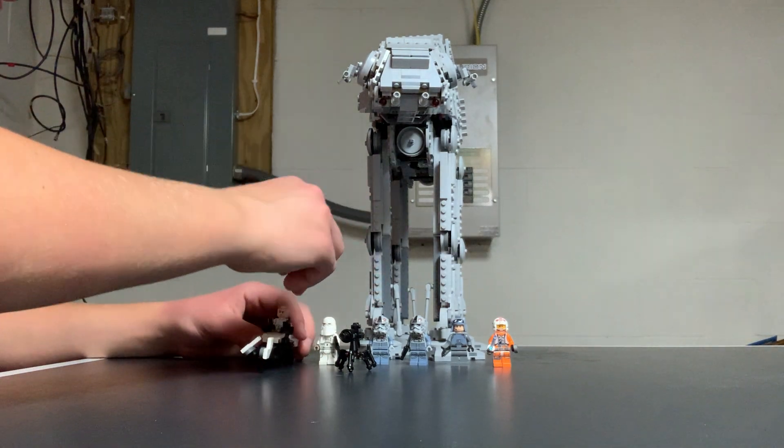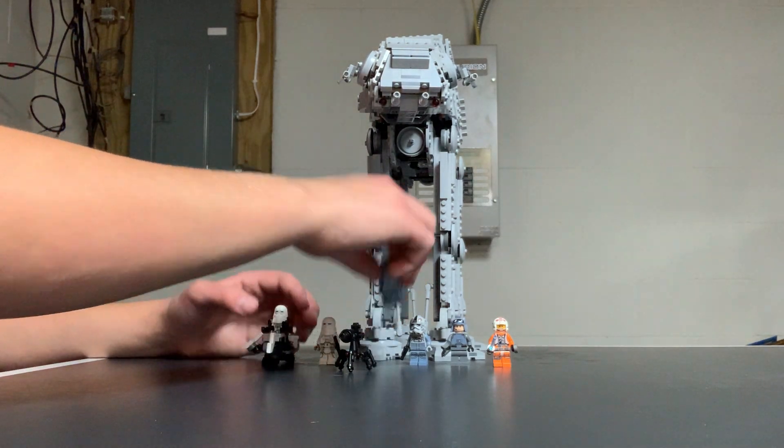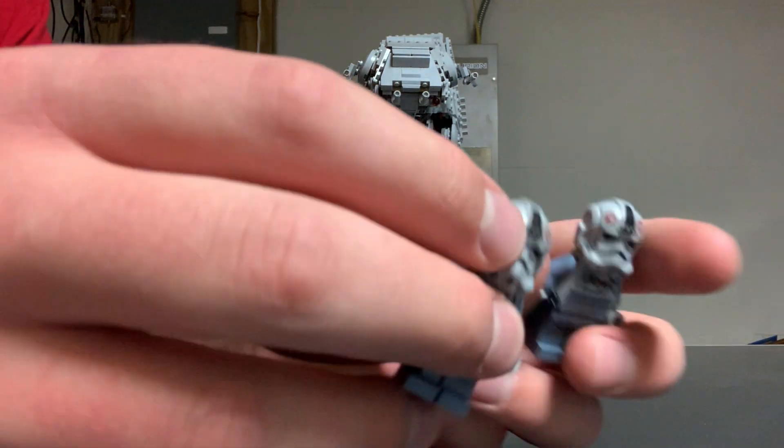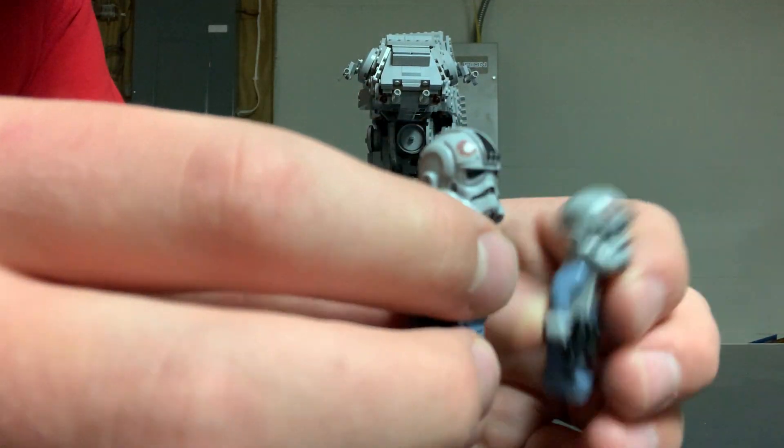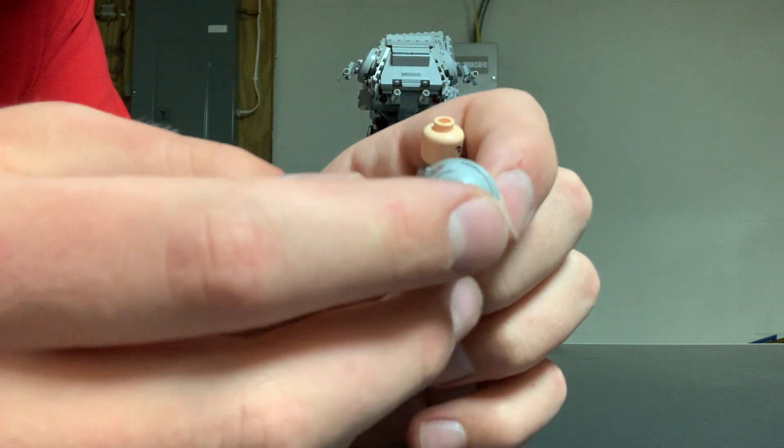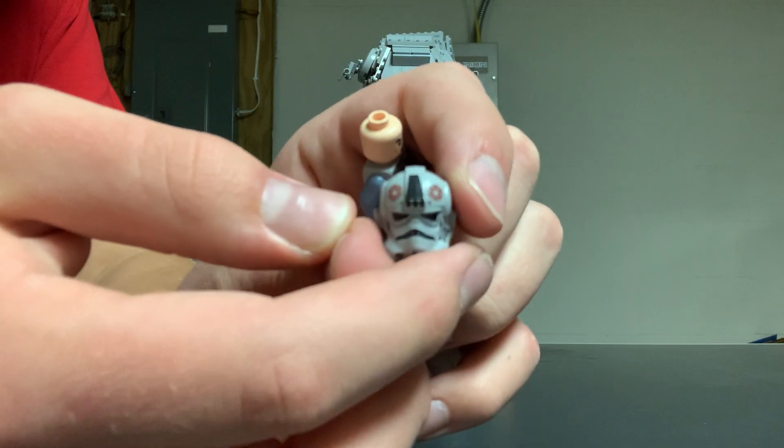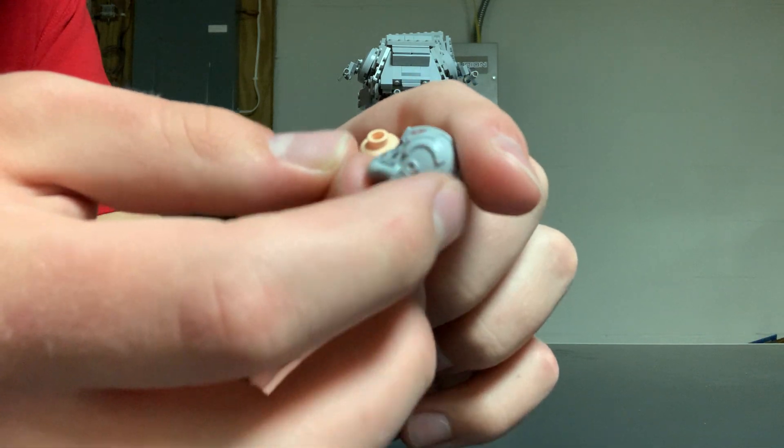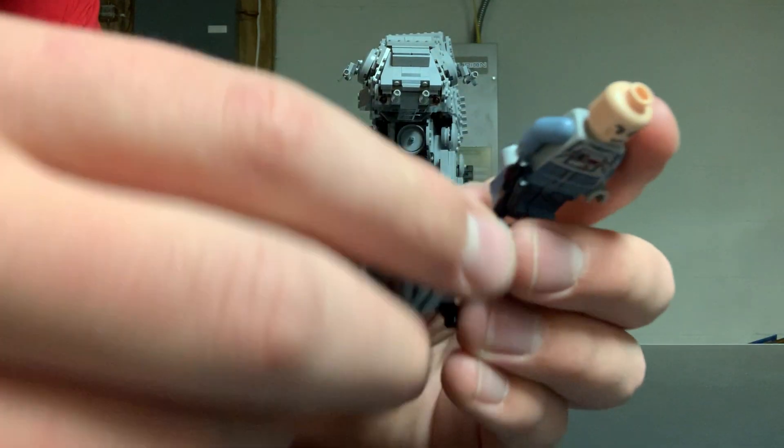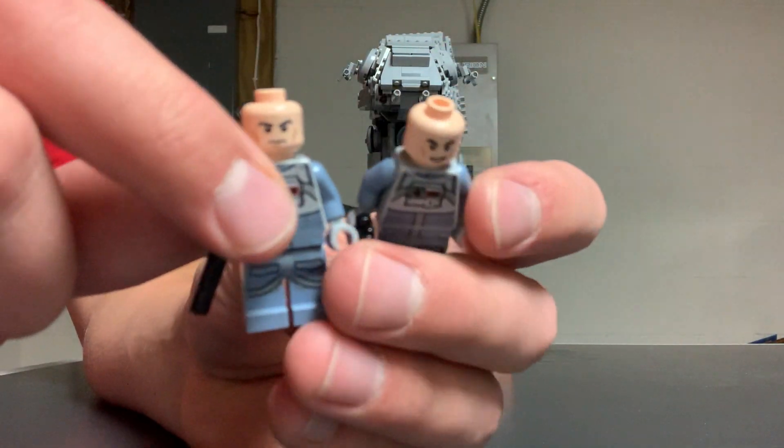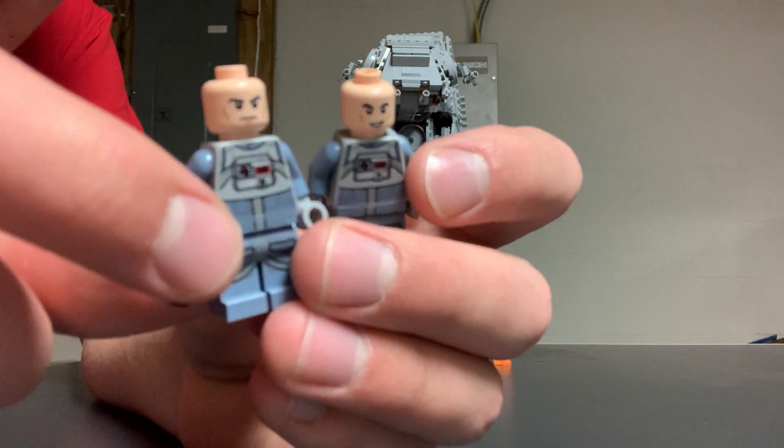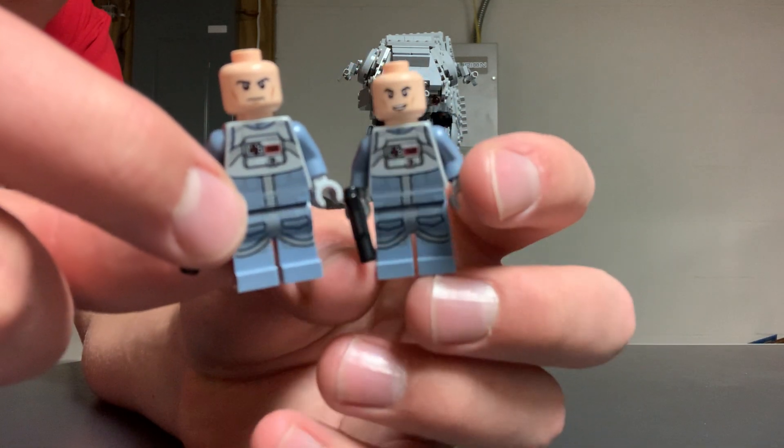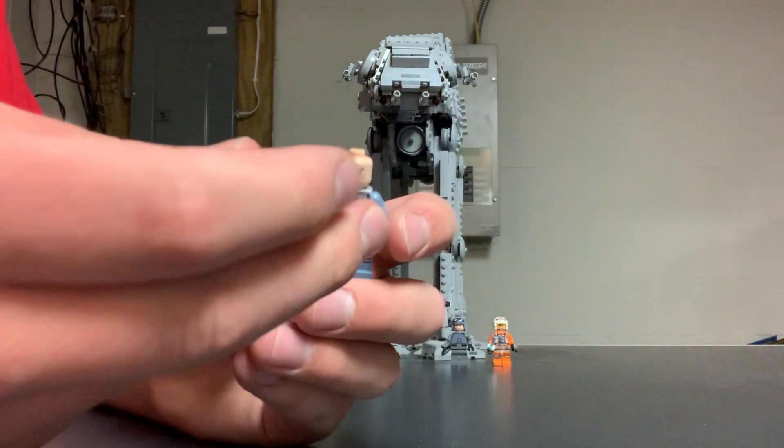Then we got two AT-AT drivers with the nice TIE Fighter Pilot helmet mold, but in gray. Some Imperial logos on the front there and some black markings. Both of them have different faces. They got nice torso printing with that tubing, and both of them have small blasters.